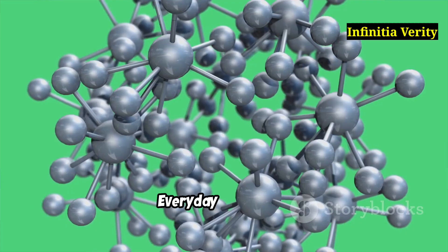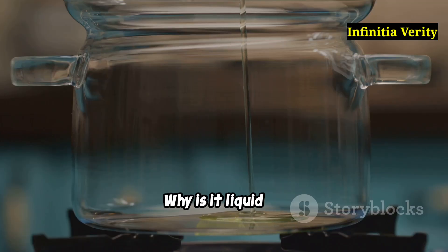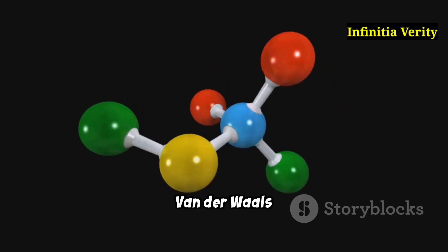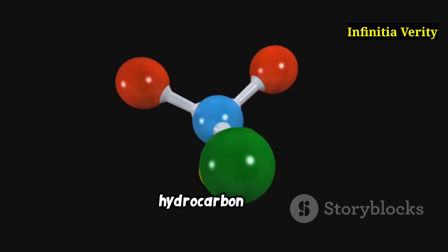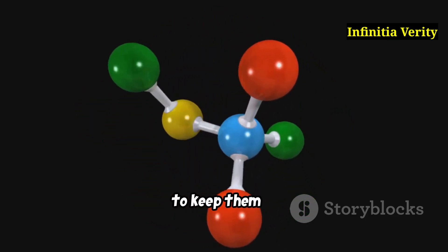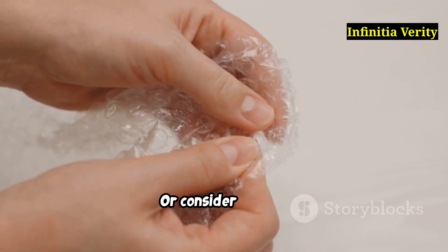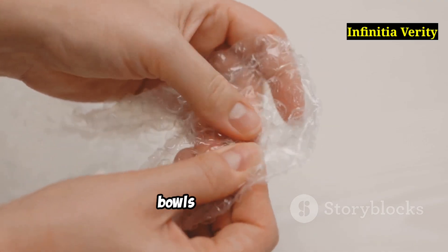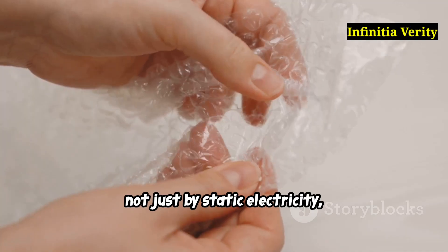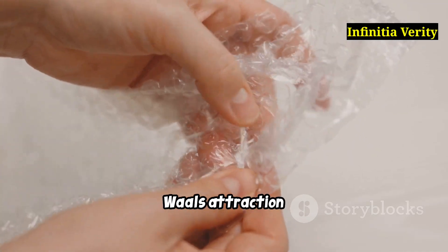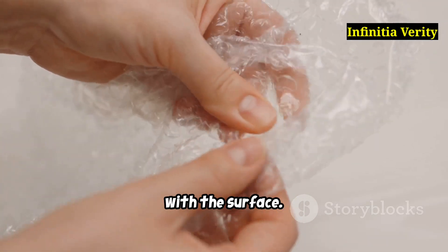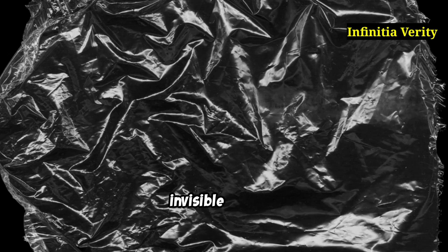Scene 3 - Everyday chemistry. Think about cooking oil. Why is it liquid at room temperature instead of floating away like a gas? Van der Waals forces hold the long hydrocarbon chains together just enough to keep them in liquid form. Or consider plastic wrap. It clings to bowls and leftovers not just by static electricity, but also by van der Waals attraction with the surface. Your leftovers are safe thanks to invisible physics.